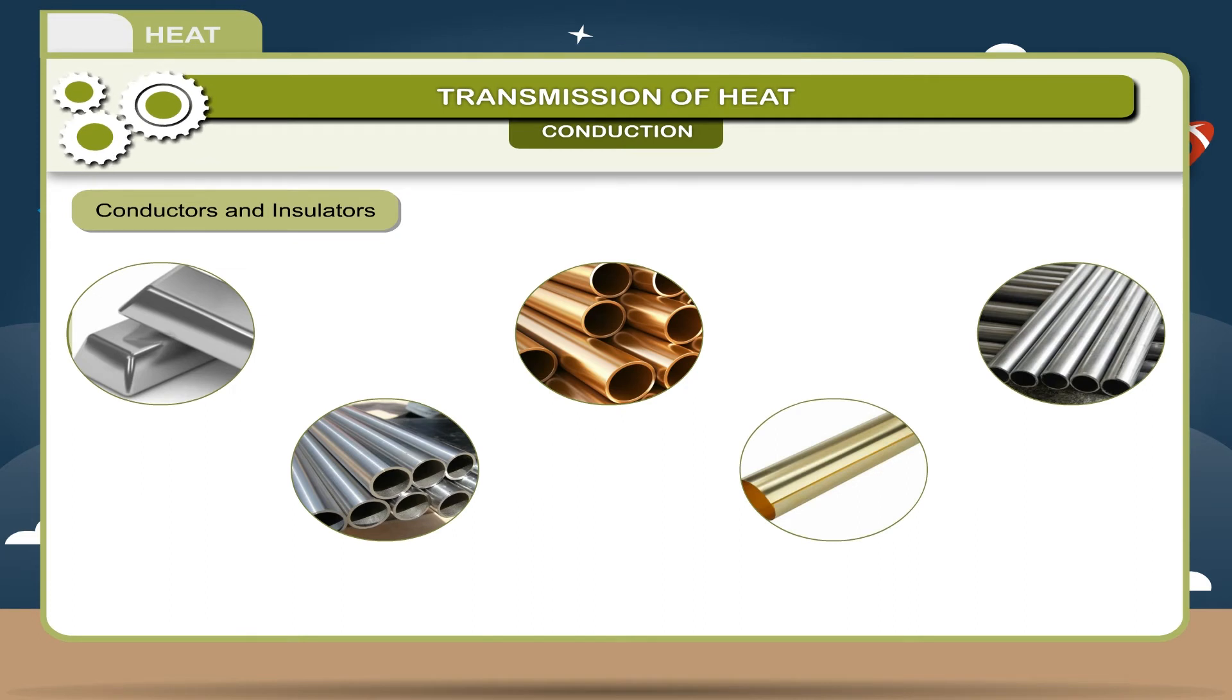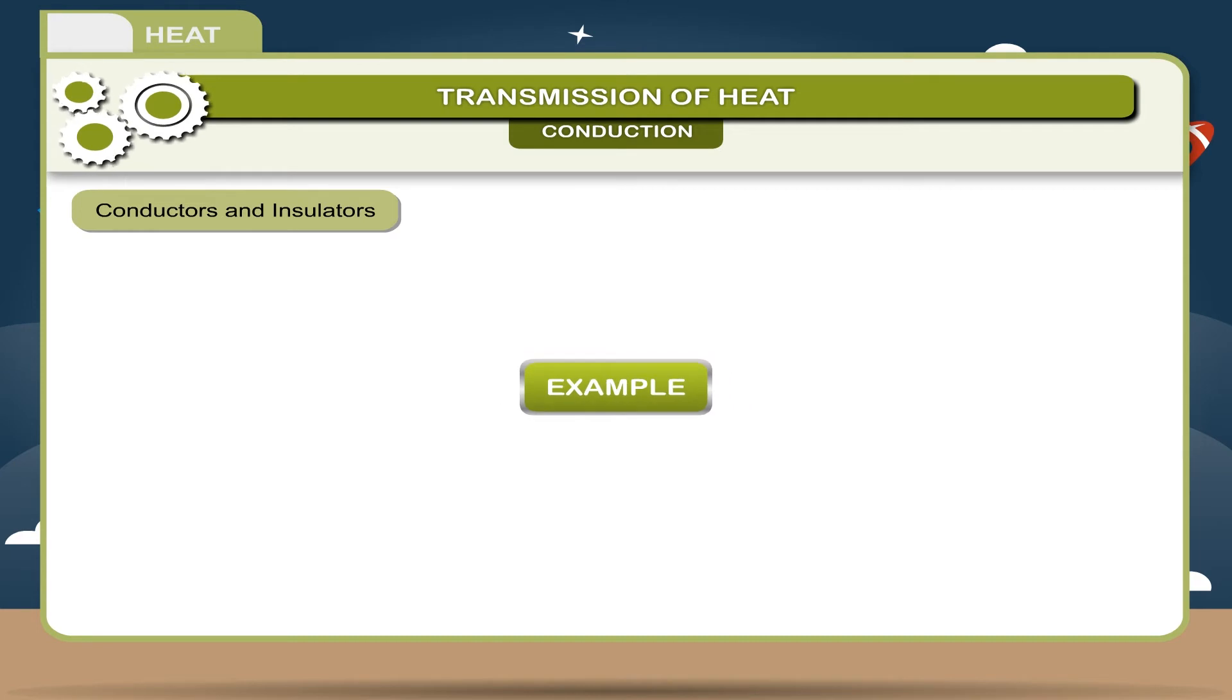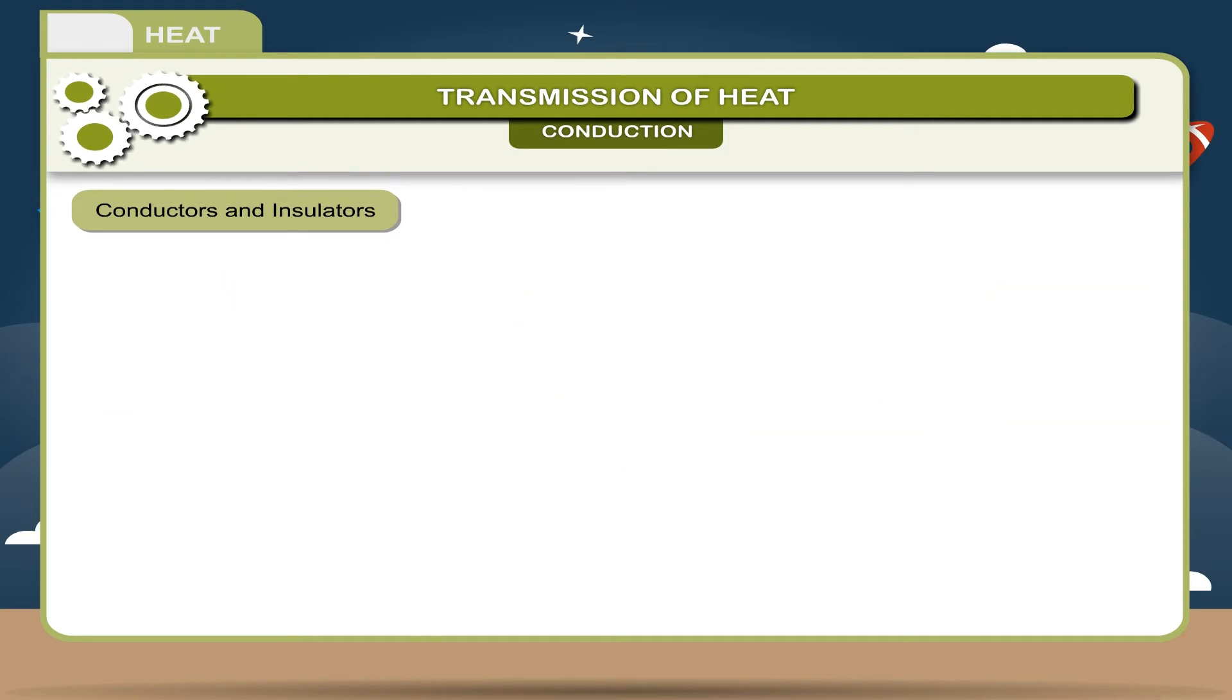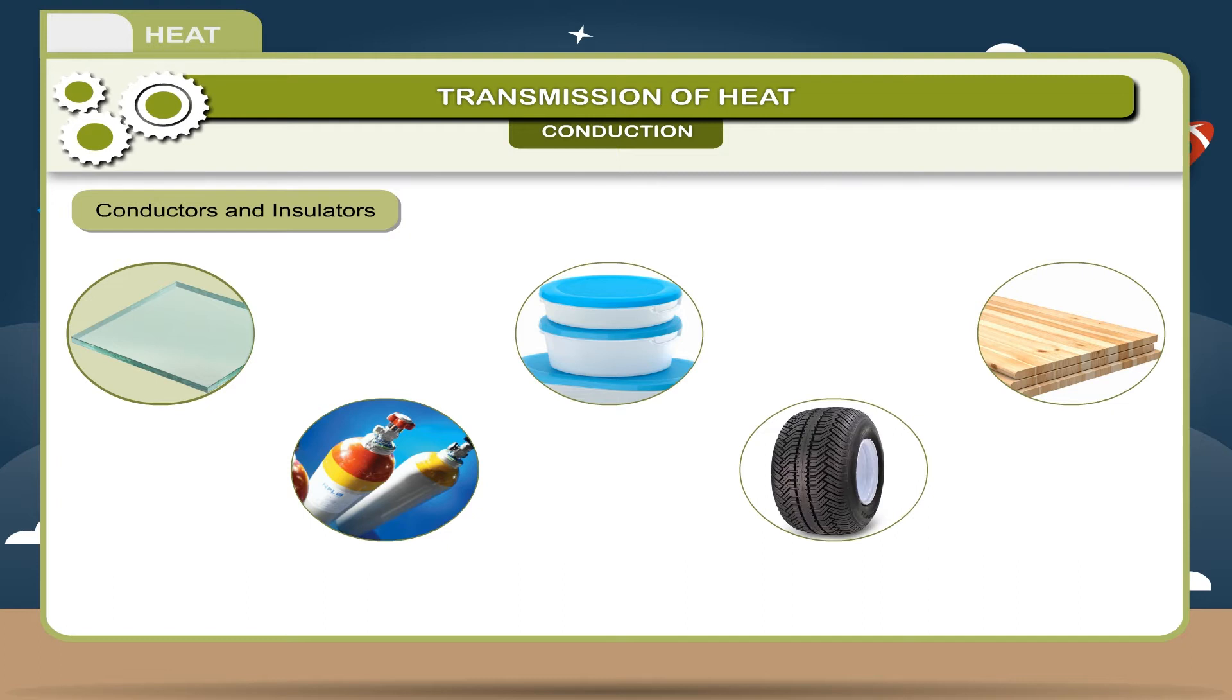Hence, materials which allow heat to flow through them are called conductors. The materials which do not allow heat to flow through them are called insulators or non-conductors or bad conductors.